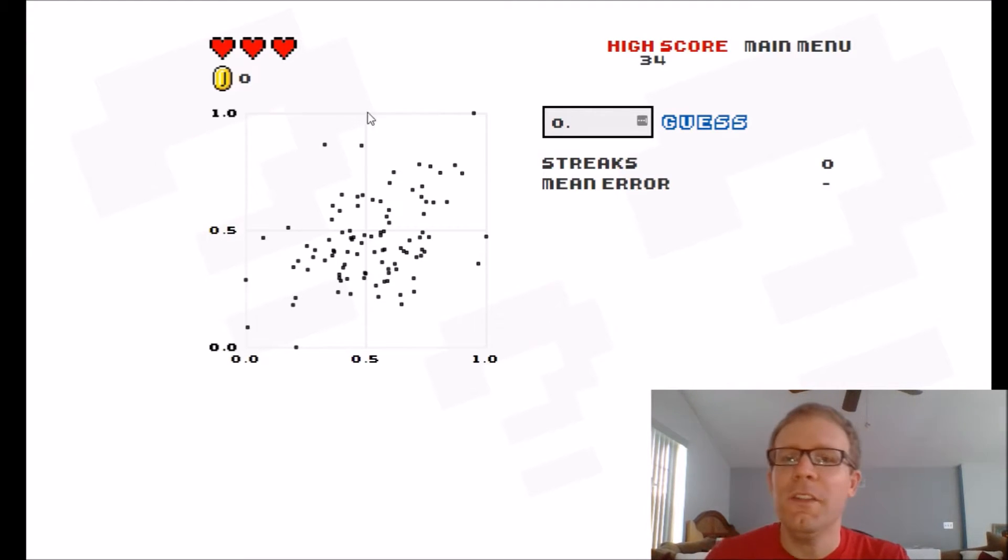Okay so I start out. You see the interface is pretty simple. You've got your lives and your coins up here. You've got your randomly generated data set here. And you're supposed to guess what you think the r value is here. Now all of the r values are positive. Everything's going up and to the right. So you're not having to discern anything with negative. Oh you also get extra points for getting streaks. And I guess there's a reporting of your mean error there.